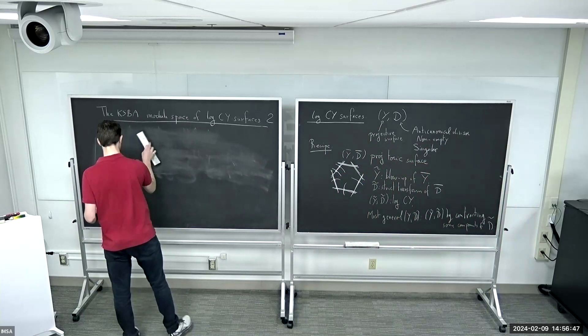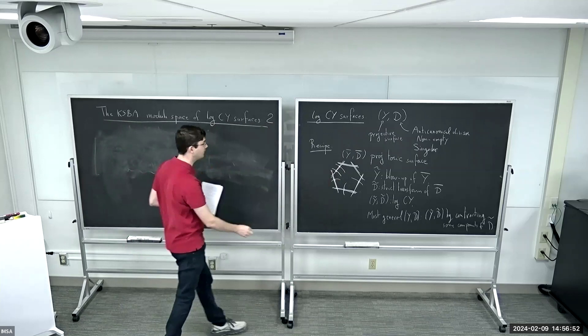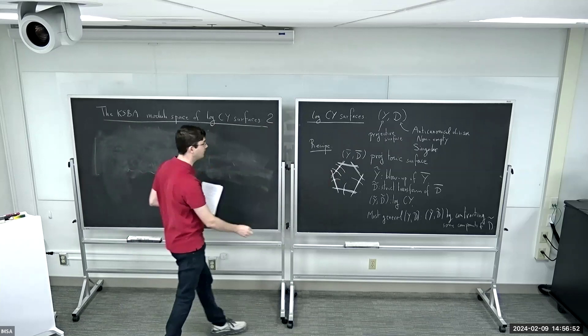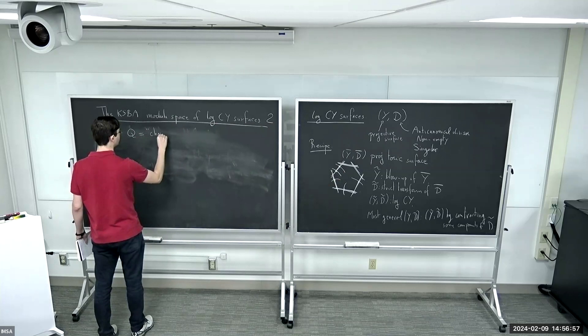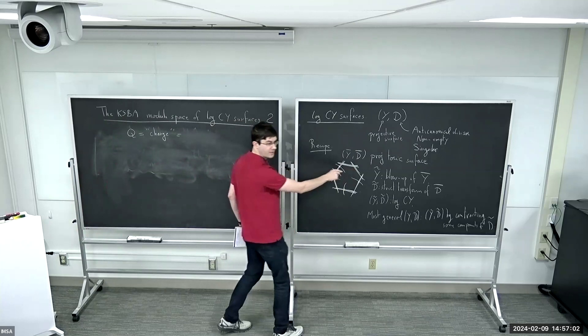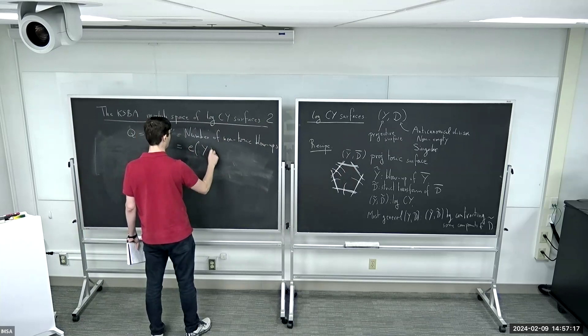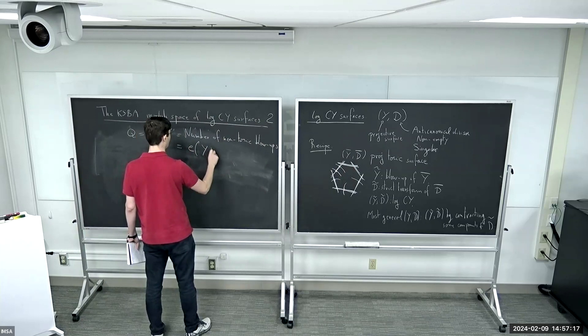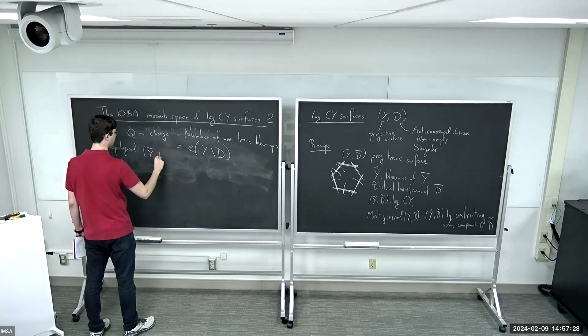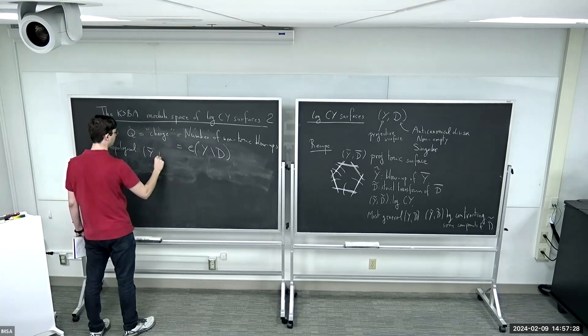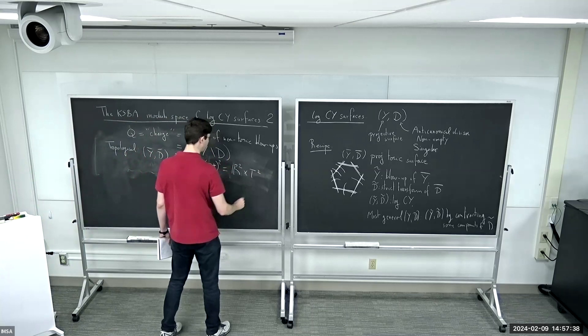I'm giving this description to see how much non-toric this kind of geometry is. There's a basic invariant of such log Calabi-Yau pair (Y, D) that is called Q — it's called charge — which is the number of non-toric blow-ups that you're making. It is possible to show that it is the same thing as a topological characteristic of the complement Y minus D.